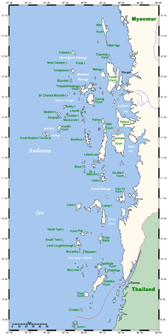Archipelagos may be found isolated in large amounts of water or neighbouring a large land mass. For example, Scotland has more than 700 islands surrounding its mainland which form an archipelago.